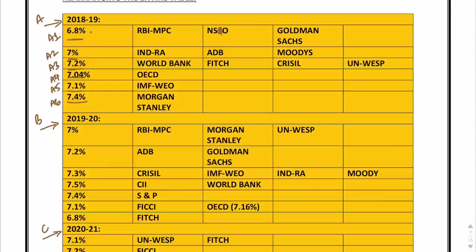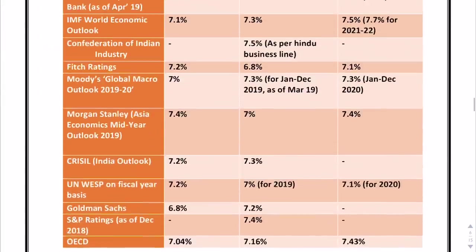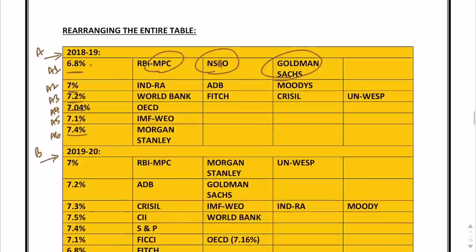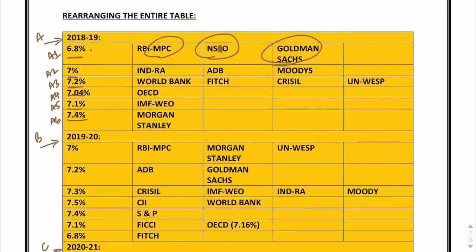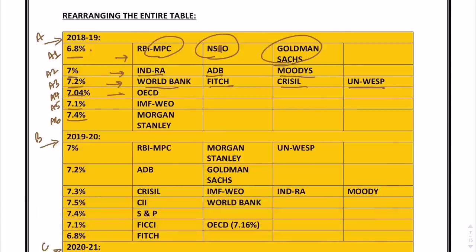For 2018-19, a 6.8% forecast is made by three organizations: Monetary Policy Committee, National Statistical Office, and Goldman Sachs. 7% is given by three organizations: IndRA, Asian Development Bank, and Moody's. 7.2% is given by four organizations: World Bank, Fitch, Crisil, and World Economic Situation and Prospects. It is simpler to remember this way compared to the original table where you had to remember every percentage separately.